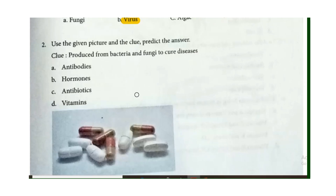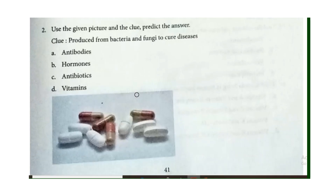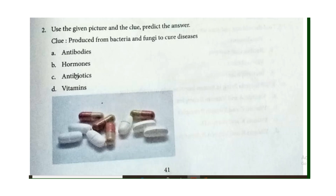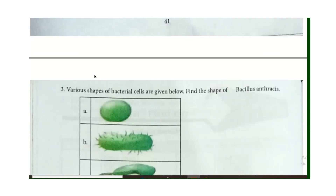Use the given picture and the clue to predict the answer. The clue given is: Produced from bacteria and fungi to cure diseases. Based on the picture, we need to find the answer. It is produced from bacteria and fungi, so the correct answer is antibiotics.